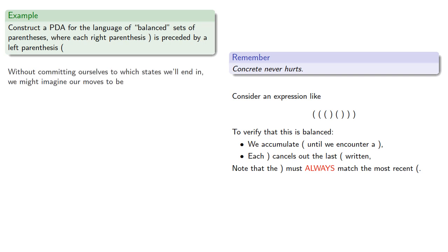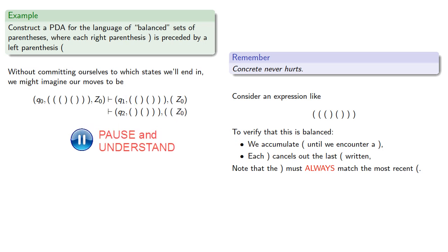Without committing ourselves to which states we'll end in, we might imagine our moves to be something like the following. We start with our initial state, we have our string, and our empty stack symbol. We'll consume that first open parenthesis, but because we need to keep track that it is an open parenthesis, we'll put it on top of the stack. Our stack now looks like open parenthesis, c0. We'll consume the next symbol of the string and put that onto the stack.